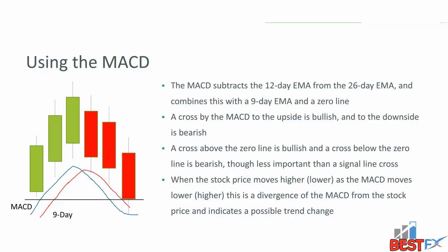Crossing the zero line is less important than the MACD crossing the 9-day line. When the stock price moves higher as the MACD moves lower, we have a negative divergence. When the stock price is moving lower and the MACD is moving higher, we have a positive divergence. A negative divergence tells us that the stock may cease to move higher and either turn down or move into a consolidation pattern. A positive divergence tells us that the stock may cease to move lower and move into a consolidation pattern or possibly move higher.